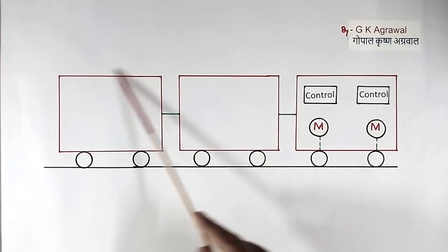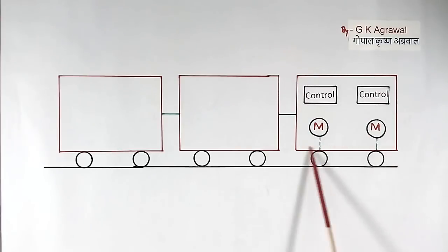Here I have shown a train. This is engine, this is rail, and these are wheels. When we have a car, there will be tires over this wheel and road will be rough. So when we run the motor or engine of the car, car will start moving. But in the train, there is no tire over this wheel. So it is not so easy that we run the motor and train will start moving.